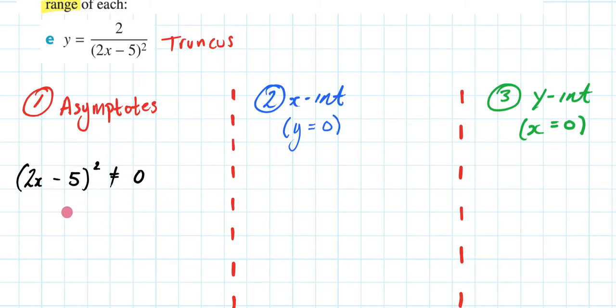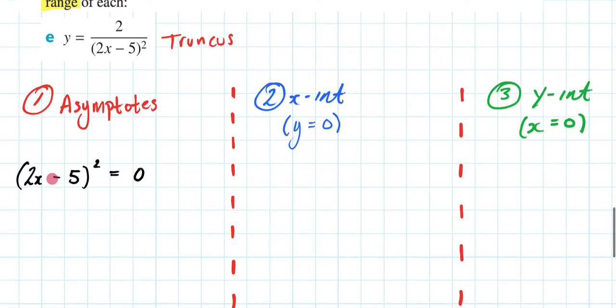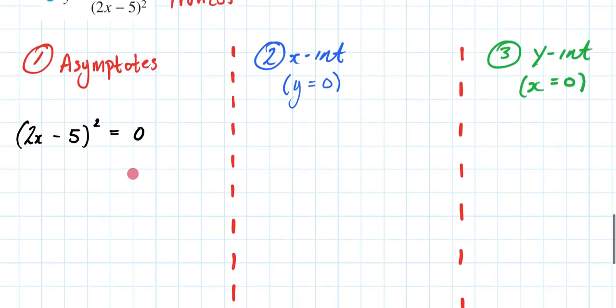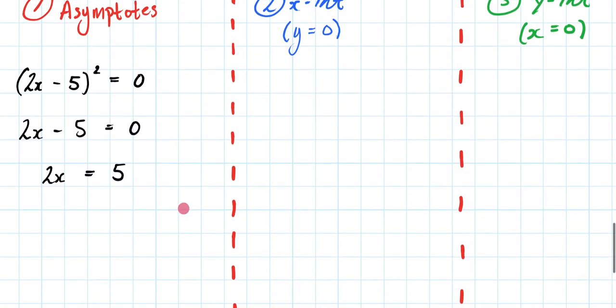Now when will this occur? What will my x value be in order for this to be 0? We need to find that to find my asymptote. I'm going to first square root both sides. So I'm going to end up with 2x minus 5 equals 0. Then I'm going to plus 5 to both sides, and then finally divide both sides by 2. So I'm going to end up with 5 over 2. So that is going to be one asymptote.